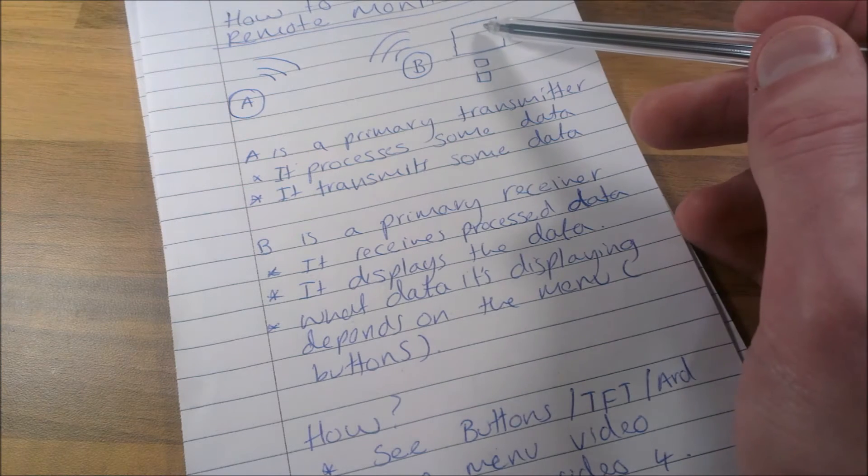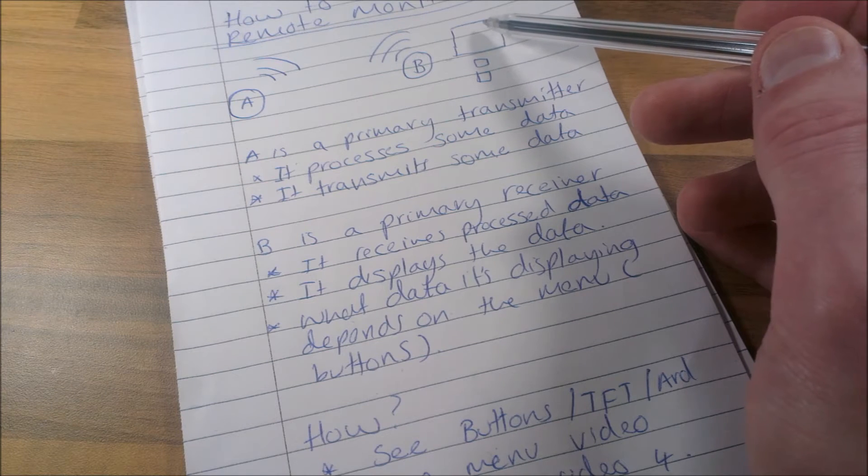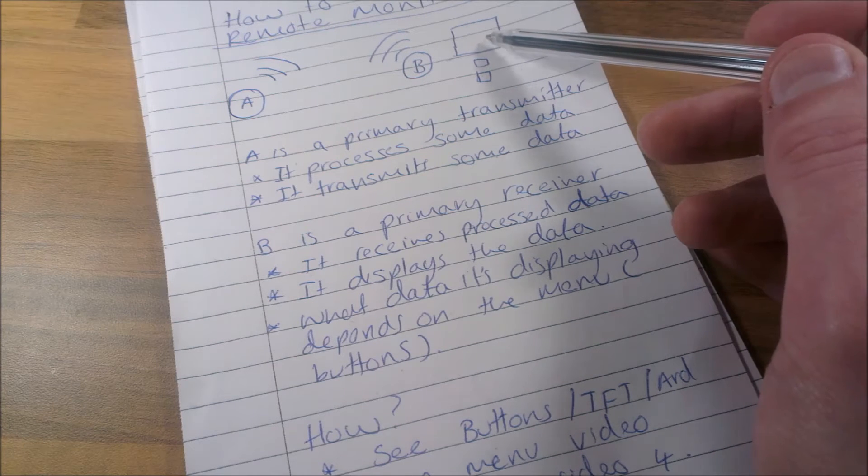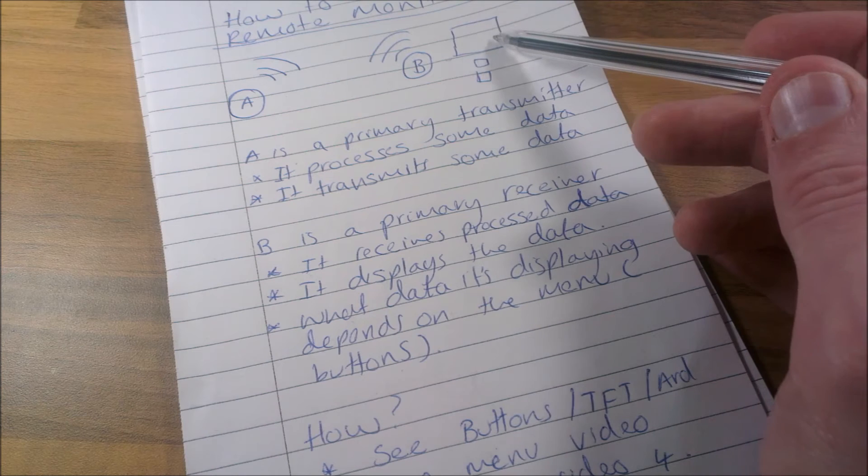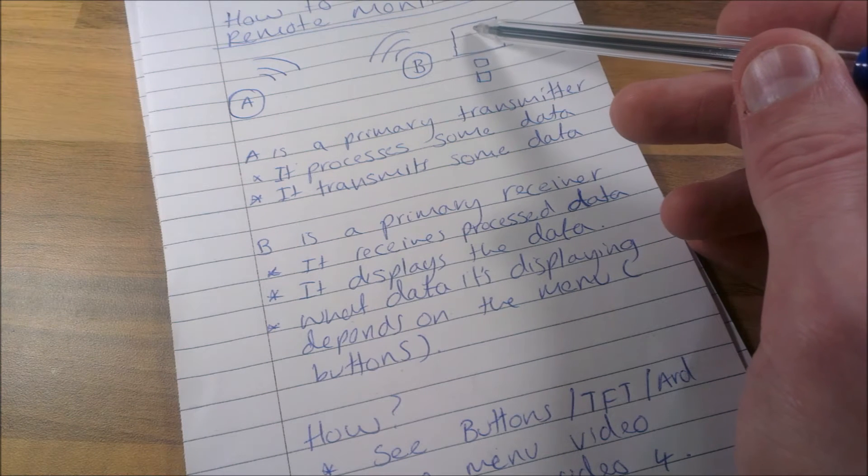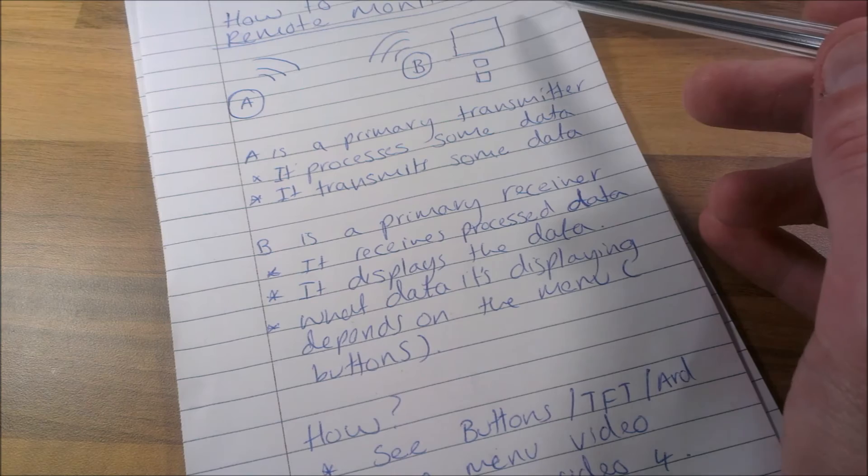If you're looking at the menu which relates to light, then it's going to show the light data. It's not going to show the other data, just the light data. Whereas if you're looking at voltages, it will only show voltages, it won't show the rest of the data.